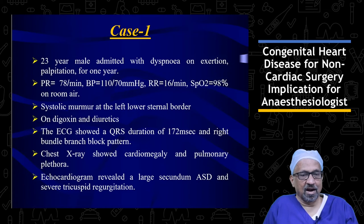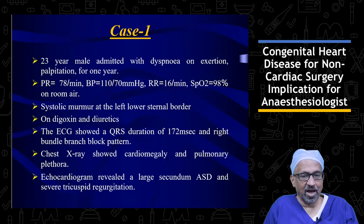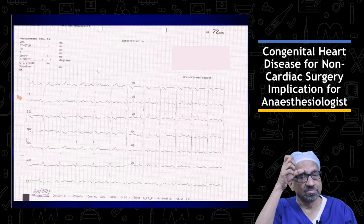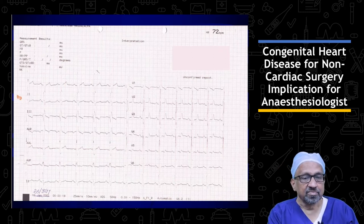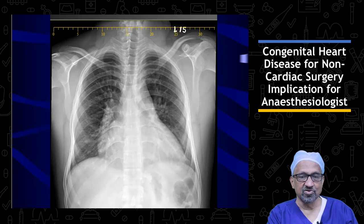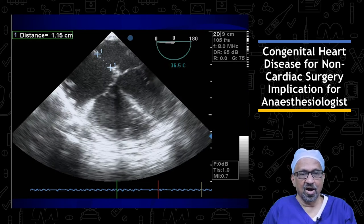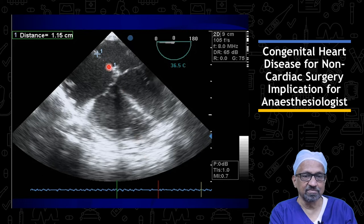The patient is on digoxin and diuretics. ECG shows QRS duration of 172 milliseconds and a right bundle branch block pattern. The echocardiogram shows a large secundum ASD and severe tricuspid regurgitation. The ECG shows incomplete right bundle branch block and the X-ray shows increased pulmonary vascular markings with pulmonary plethora. The echocardiogram shows an atrial septal defect approximately 1.2 centimeters in size.